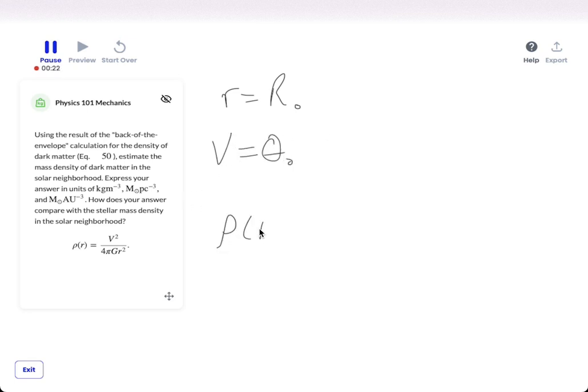That means that your density rho of r0 equals theta0 squared over 4 pi g r0 squared. Plug in your numbers, and you get 9.5 times 10 to the negative 22 kg per meter cubed.